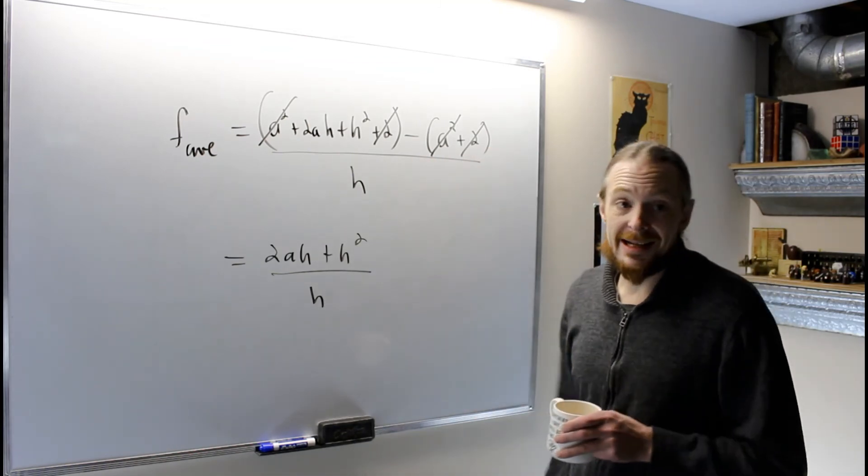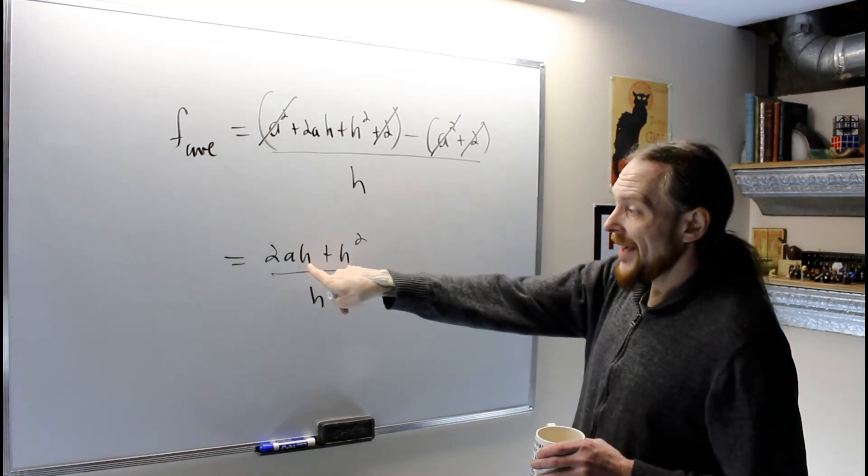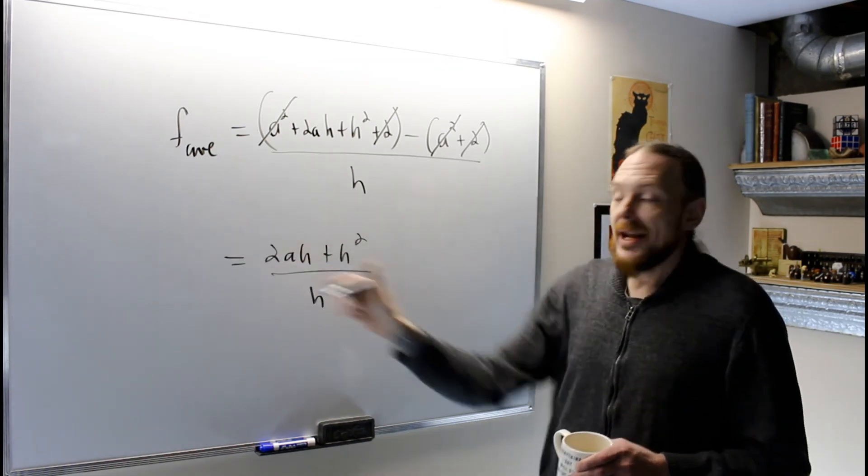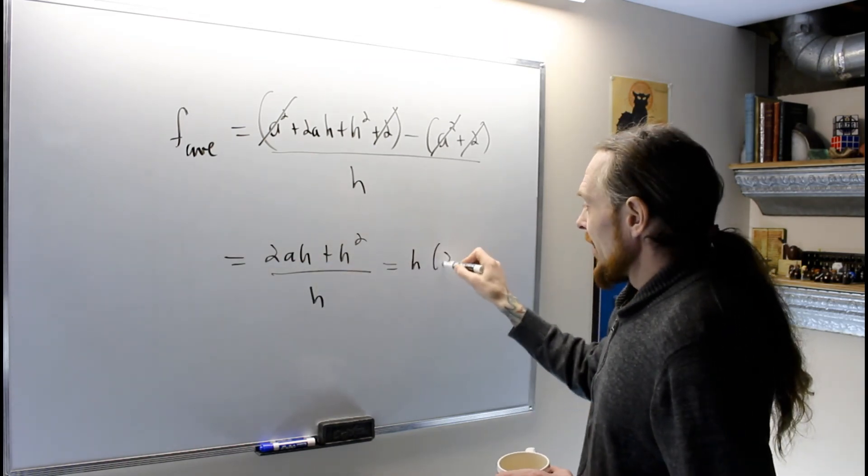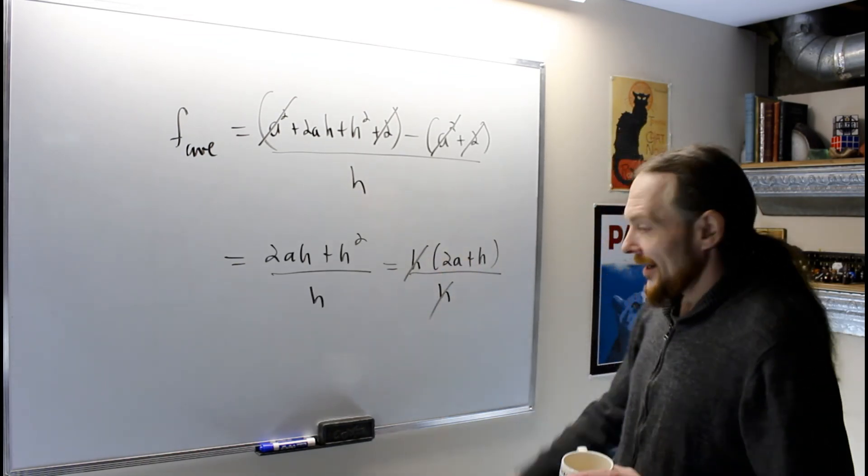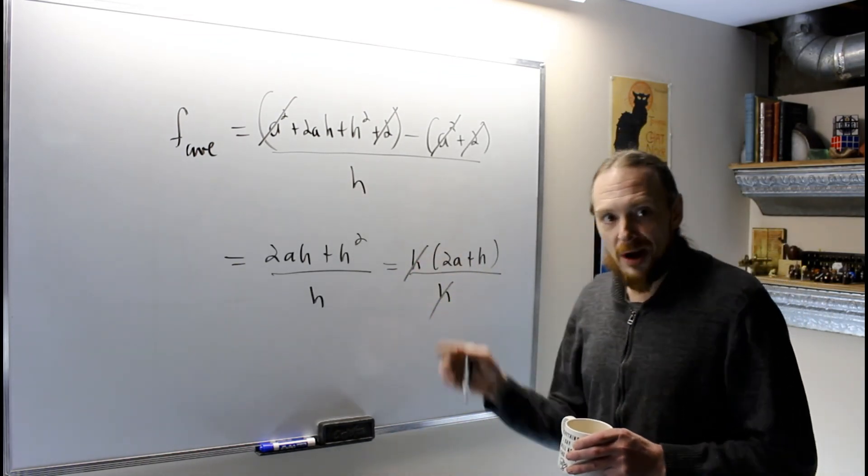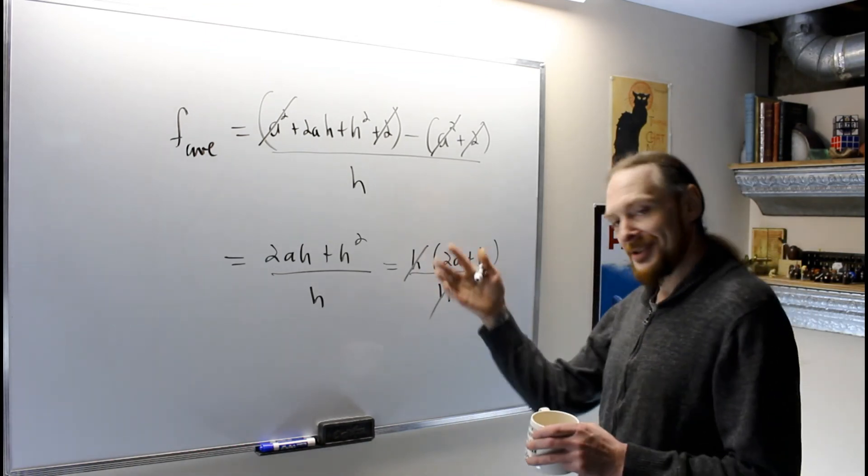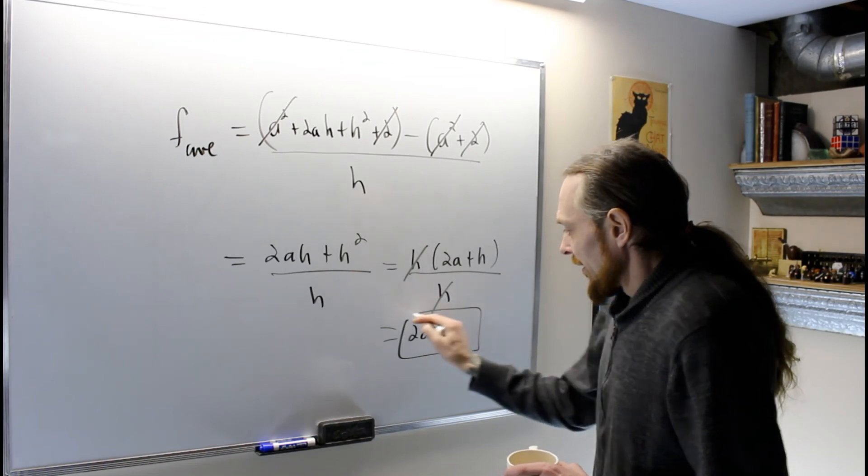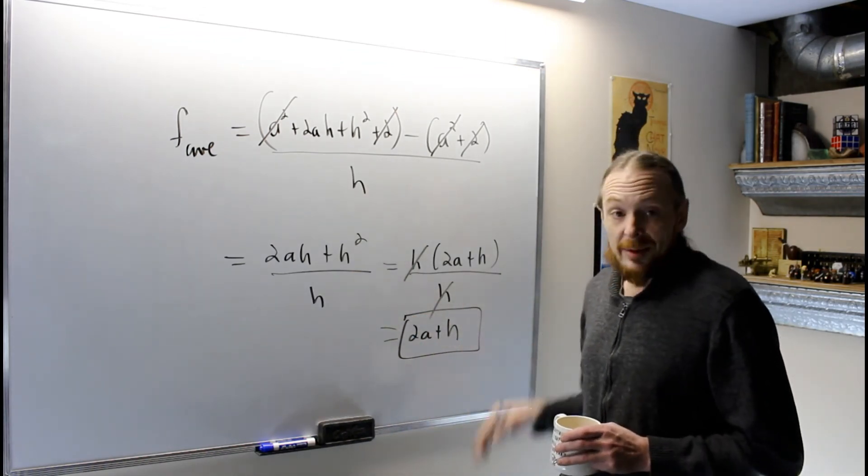Now, because everything that didn't have h's canceled off, I can factor h out of the top. Don't try and cancel like this—factor one of the h's out, that's the safest way to do this. I'm going to get 2a + h over h. Now that it's factored out, I cancel it. Also, that's not a 0, that's a 1. So f average on that interval is 2a + h.